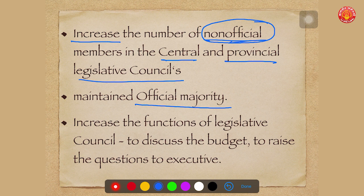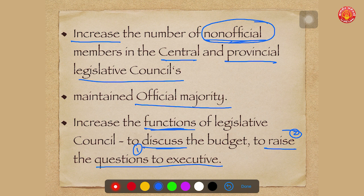The most important development was that this act increased the functions of the legislative council. Members were given the function to discuss the budget, and they were also given the function to raise questions to the executive council. These two things gave voice to official as well as non-official members to put a finger on wrongdoings in the executive functions of the Viceroy and governor.